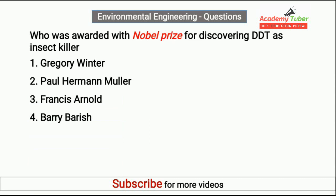Who was awarded with Nobel Prize for discovering DDT as insect killer? Answer is Paul Hermann Muller.